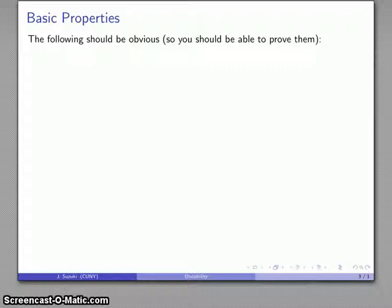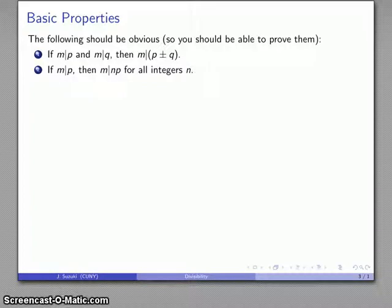Now there are a couple of basic properties of divisibility that should be pretty obvious from the definition plus a little bit of algebra. What that means is you should be able to prove them if asked. If I have M divide some number and M divide some other number, then M is going to divide the sum or difference of those two numbers. Likewise, if M divides a number, then M divides N times that number for any integer N.